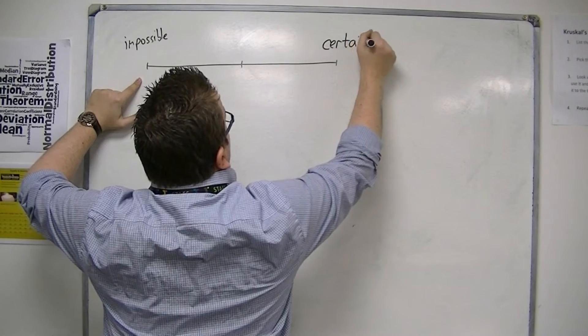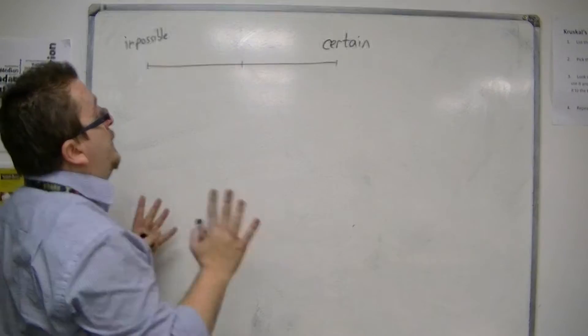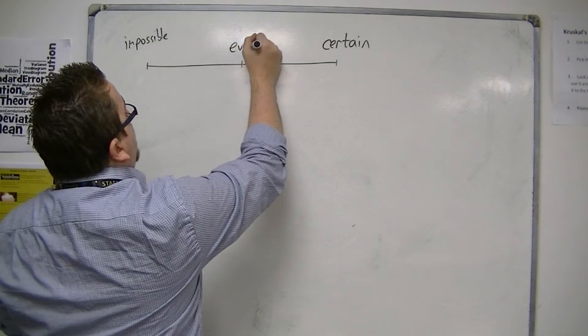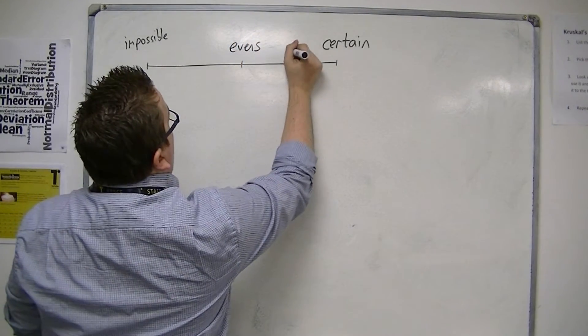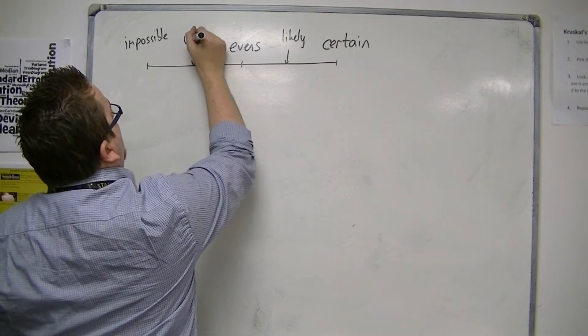And then halfway, well, it could be one or the other, so we'd probably call that 50-50, or evens. So this is where we'd be thinking, well, it's going to be likely, and then unlikely.